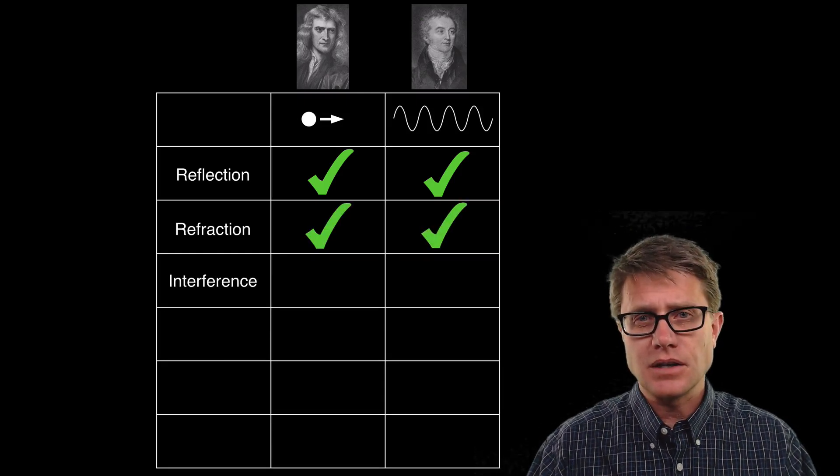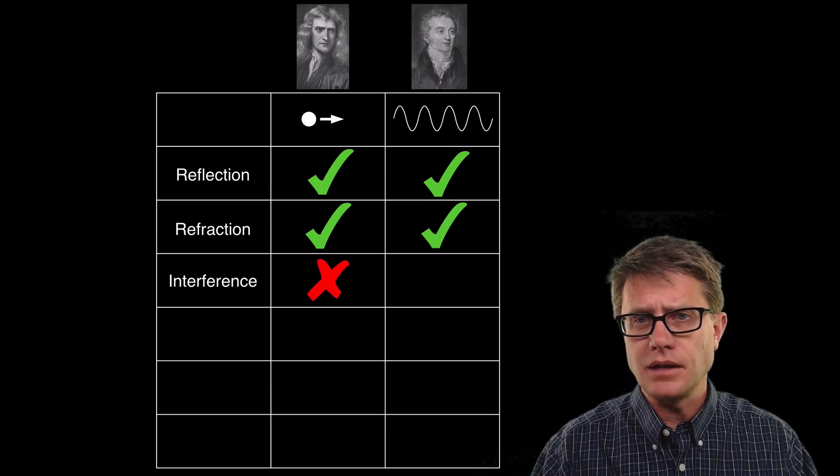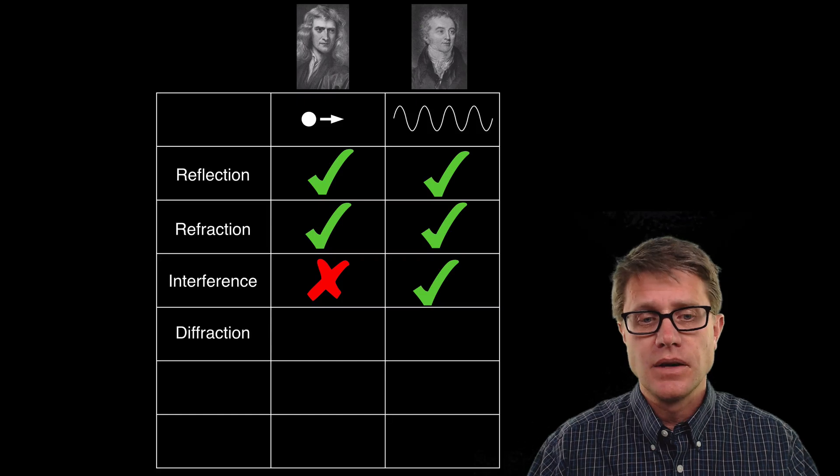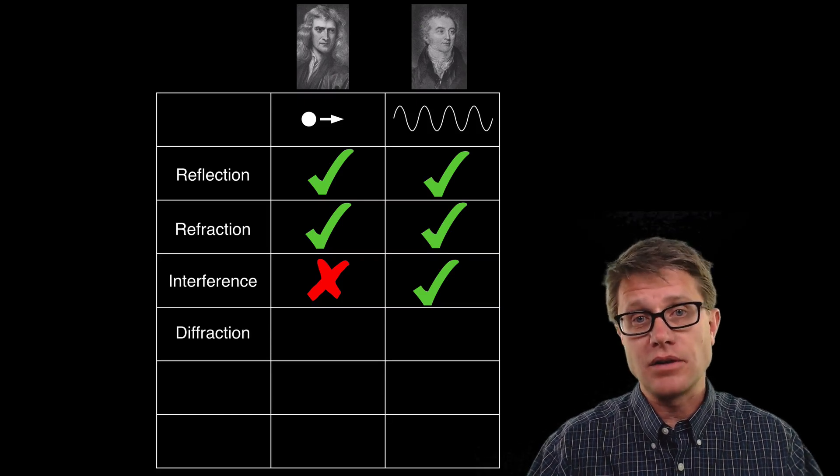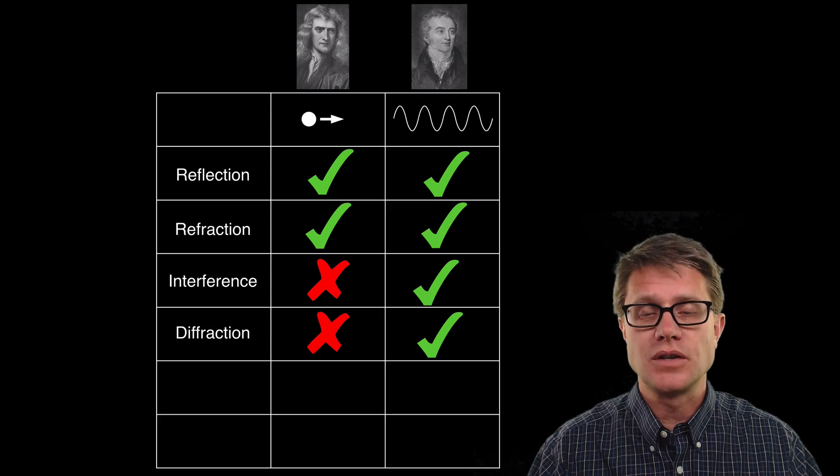If we look at interference, can they interfere with one another? The particle model does not hold up. They cannot interfere with one another. But the wave does. Do they diffract? Do they bend around objects or as you go through an opening? We would say particle no, wave yes.